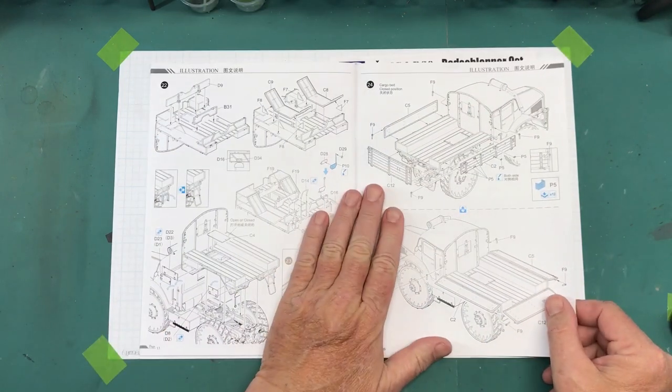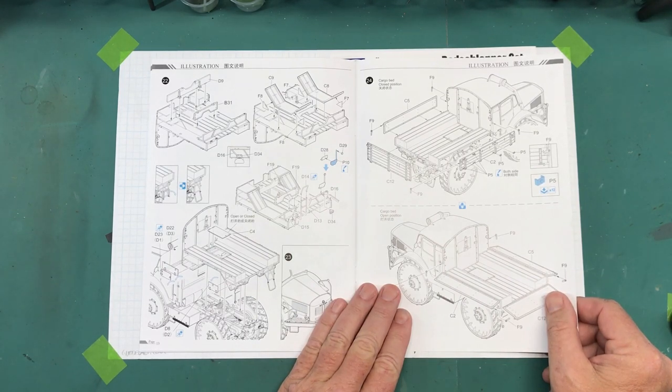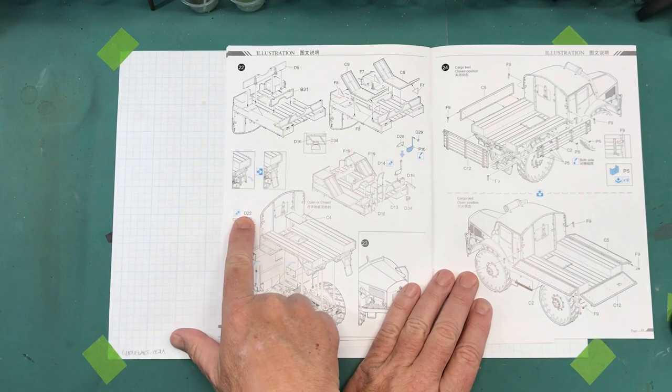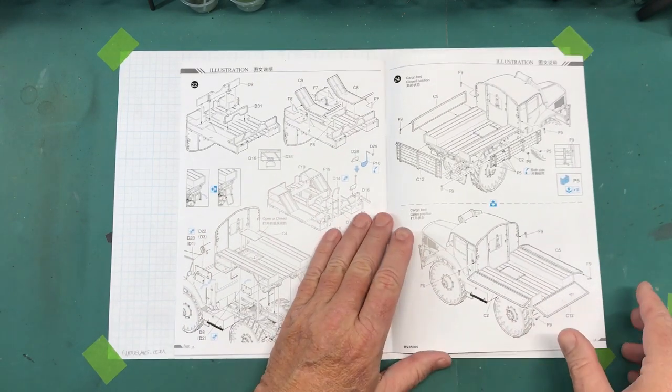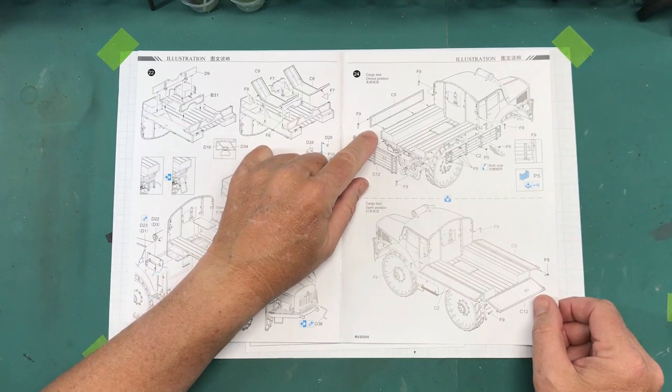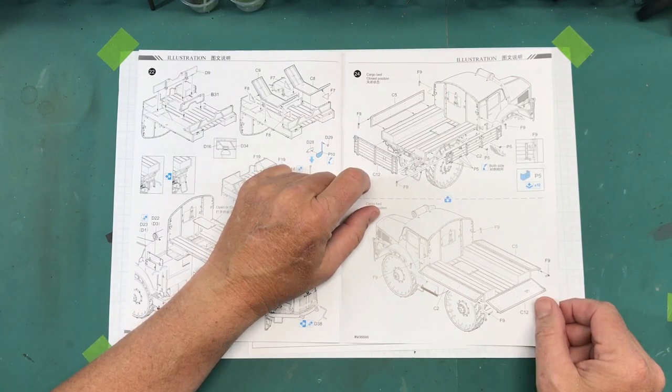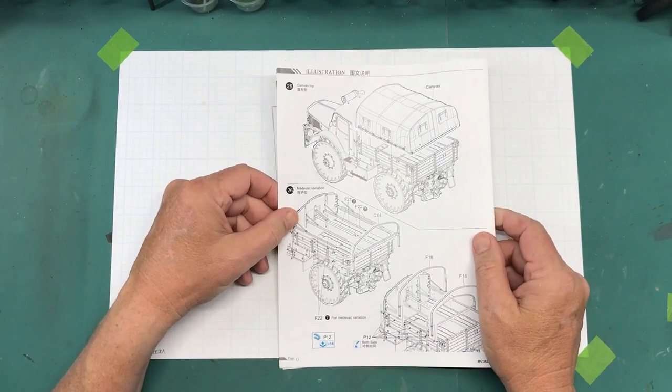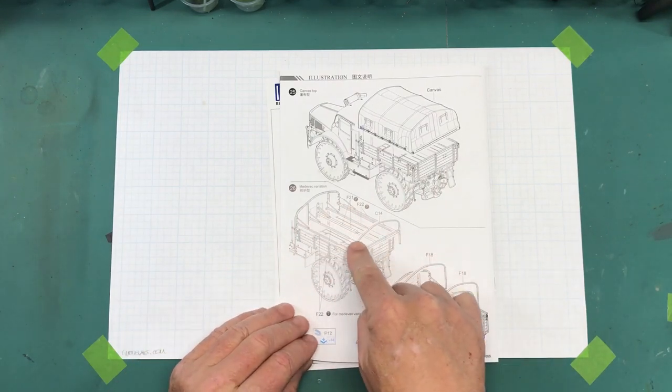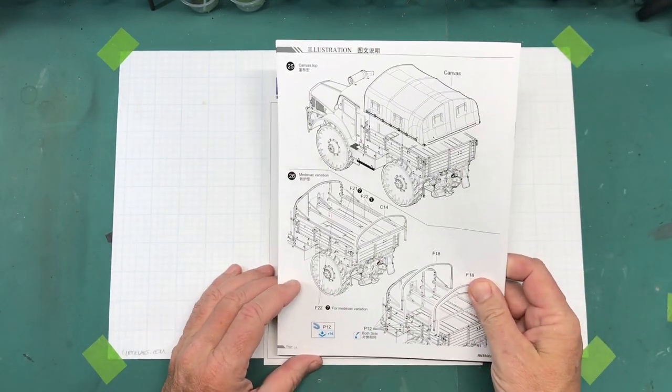Pretty straightforward. Looks like it's not too crazy. Looks like they've got this laid out similar to the way Dragon does it. D22 would be on this side, D3 would be on the other side I'm assuming. Looks like you can pose it with the cargo bed either closed or open, and there's parts associated with how that's set up. So that's kind of cool. The final thing is putting on the cover if you use it. You've got a canvas top and then you have a medevac version which has some railing kind of things. So that's kind of interesting.